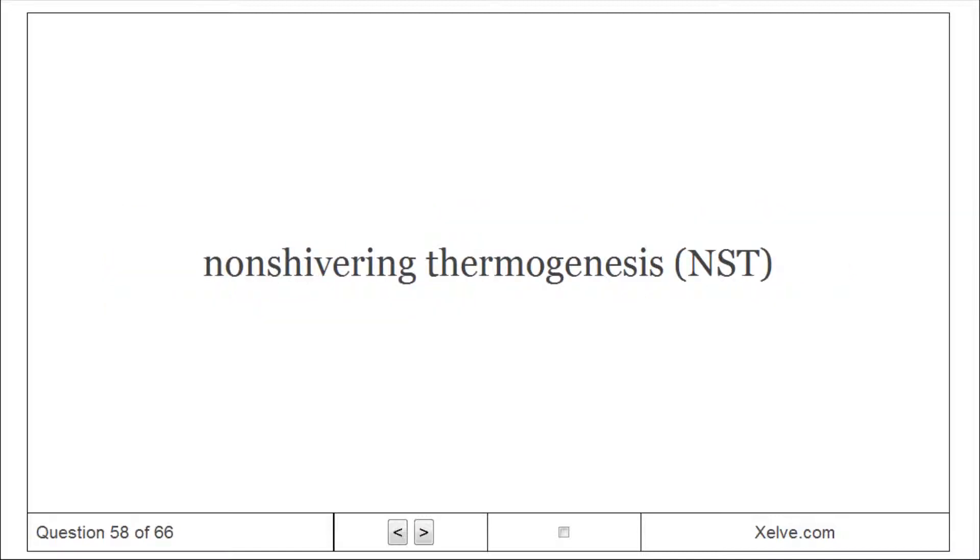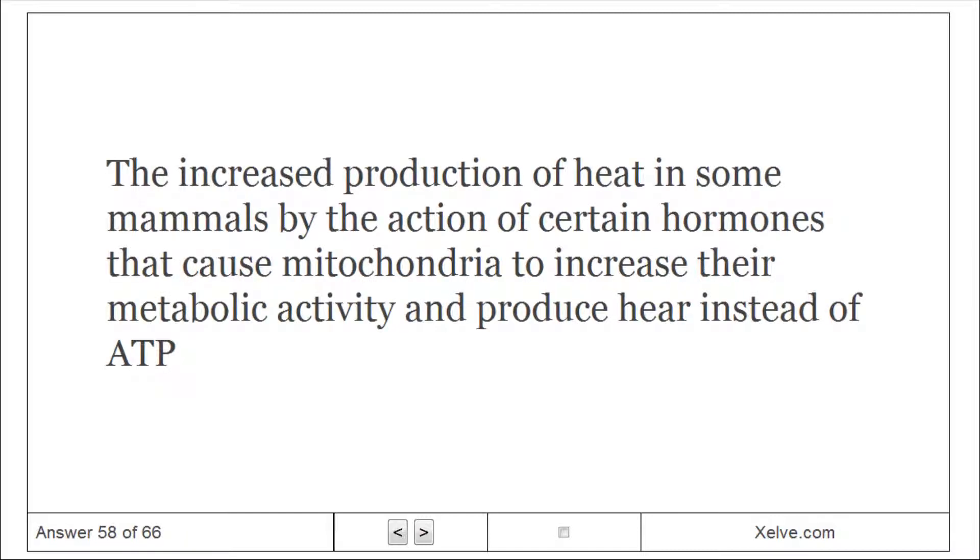Non-shivering thermogenesis: The increased production of heat in some mammals by the action of certain hormones that cause mitochondria to increase their metabolic activity and produce heat instead of ATP.